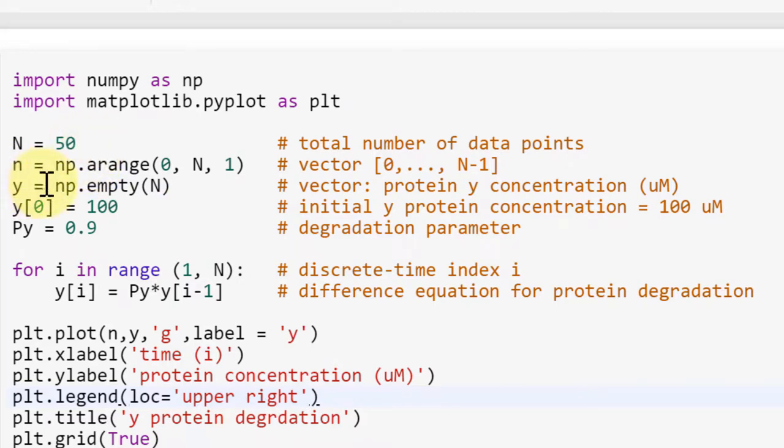The small n is just a vector that goes from 0 to N minus 1. In this case 49. So it's an integer vector. So we have 0, 1, 2, 3, 4, up to 49. And the total number of data points is again 50.